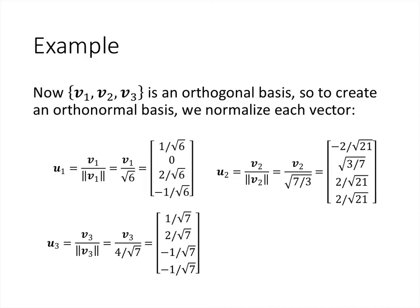So those three vectors form an orthogonal basis, and so if what we want is an orthonormal basis, we just have to take the lengths of each of those vectors and divide.